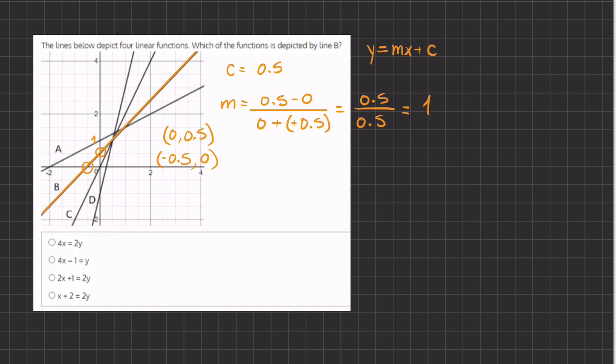So now that we know our slope is 1 and our y-intercept is 0.5, let's plug it into our formula. Our formula states y equals m which is 1x plus c and our c is 0.5. So this is the function we have to be looking for in our answers.